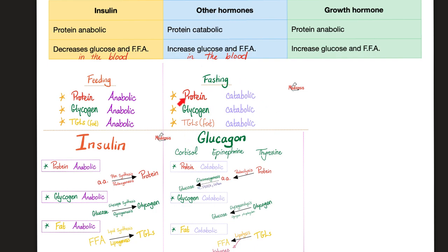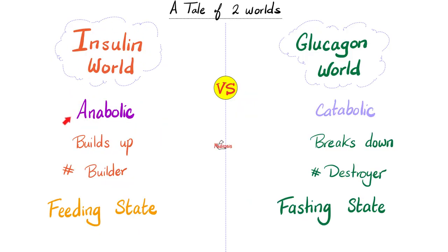What do I mean by all the others? Glucagon, cortisol, epinephrine, and thyroid hormone. Insulin is anabolic; glucagon is catabolic. Both come from the endocrine pancreas in the islets of Langerhans. Glucagon comes from the alpha cells; insulin comes from the beta cells. Insulin is a builder; glucagon is a destroyer.